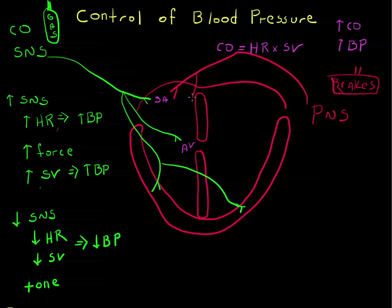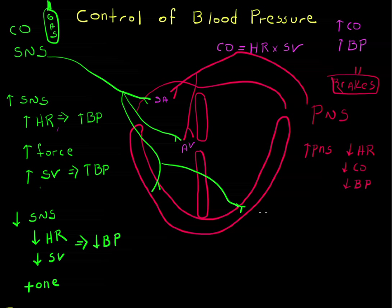The parasympathetic nervous system sends a branch to the SA node and a branch to the AV node. Increasing the parasympathetic nervous system signal to the heart decreases the heart rate, which decreases the cardiac output and therefore decreases the blood pressure.